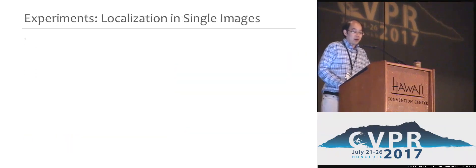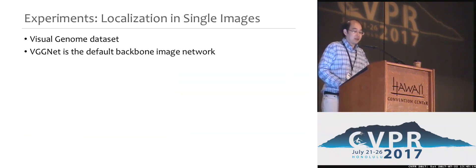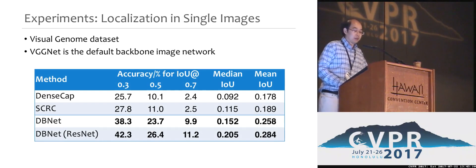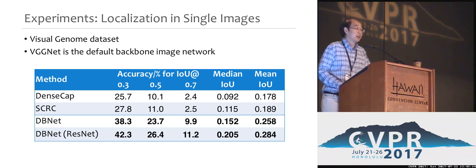We performed our evaluation on the Visual Genome dataset for localizing a known-to-be-existing object on a single image. DBNET outperformed previous methods significantly, as you can see in the table.